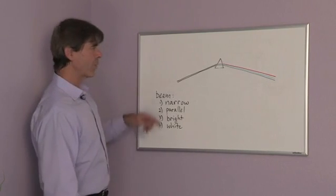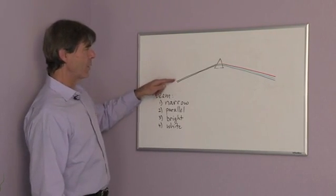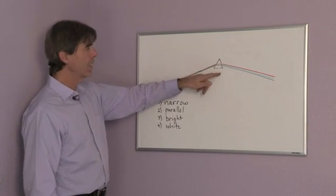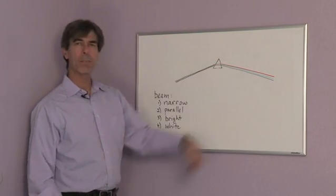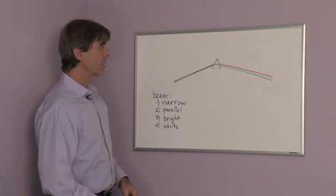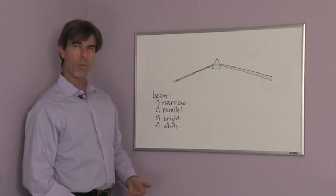The reason we want a beam of white light for a prism is that we're going to use the prism to create a spectrum and separate the red, green, and blues of the white light.